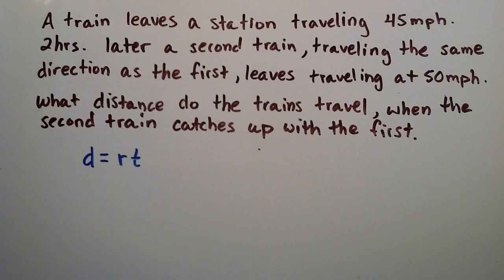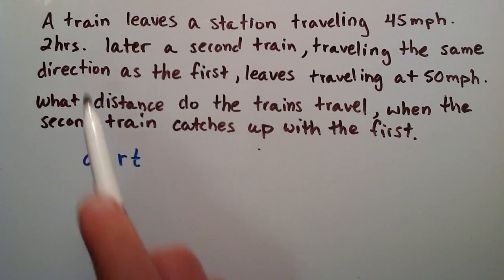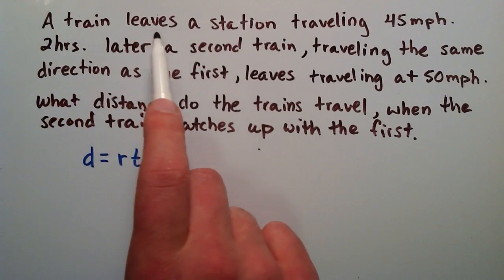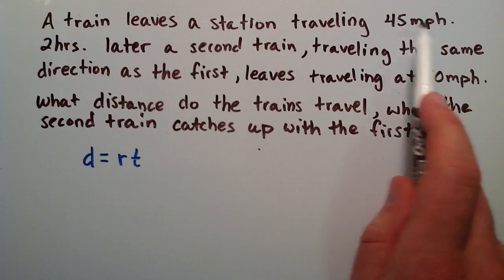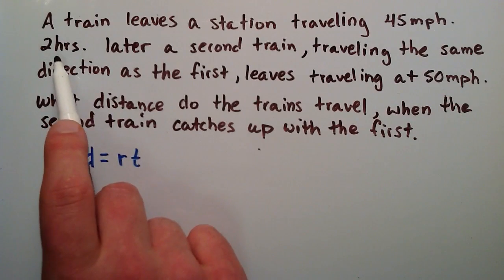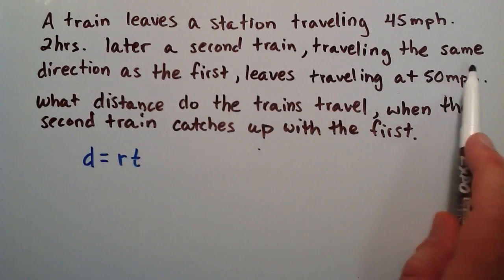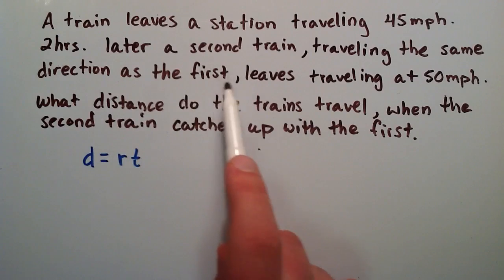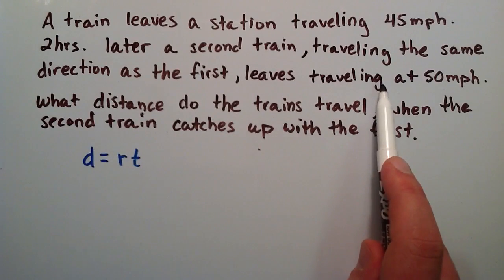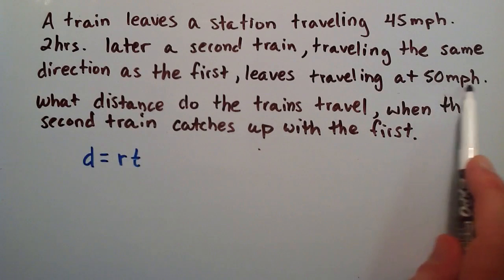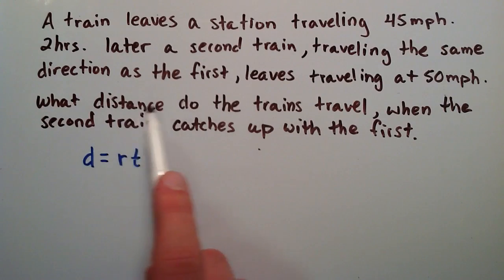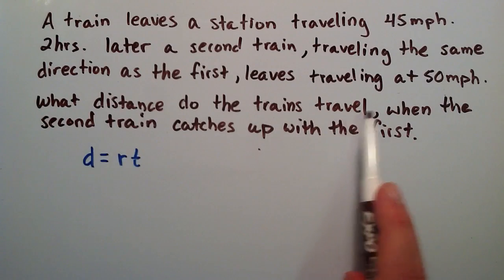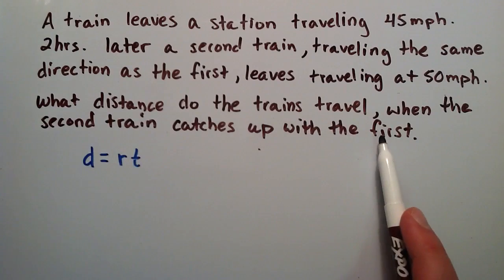Uniform motion is motion that doesn't change speed. We have a train that leaves a train station traveling at 45 miles per hour. Then two hours later a second train, which is traveling the same direction as the first, leaves the train station traveling 50 miles per hour. The question is: what distance do the trains travel when the second train catches up with the first?